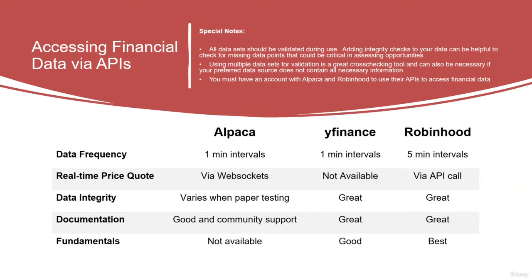It is also okay to use multiple data sets to do cross-checks. So if certain data streams don't have the data you're looking for, it is okay to look for multiple sources to grab information and then to validate it utilizing Alpaca, yFinance, or Robinhood to do some cross checks.